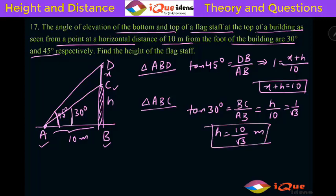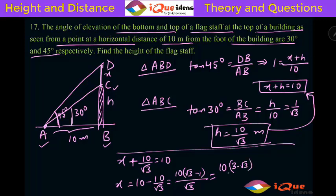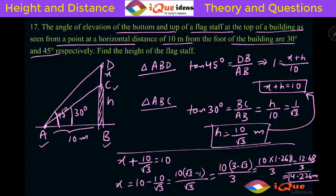We have H equal to 10/√3 and X plus H equal to 10. Substituting into the equation gives X plus 10/√3 equals 10, so X equals 10 minus 10/√3. Taking 10 common with LCM as √3 gives 10(√3 minus 1) over √3. Multiplying numerator and denominator by √3 gives 10(3 minus √3) over 3. Since √3 is 1.732, then 3 minus 1.732 equals 1.268, so it is 10 times 1.268 which is 12.68, divided by 3 gives approximately 4.226 meters. So the height of the flagstaff is 4.226 meters.